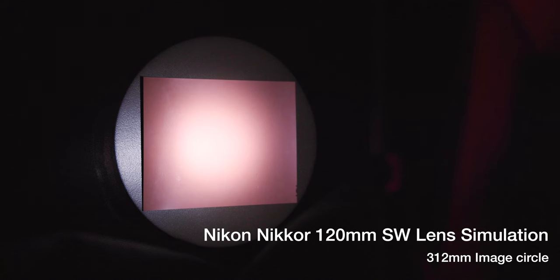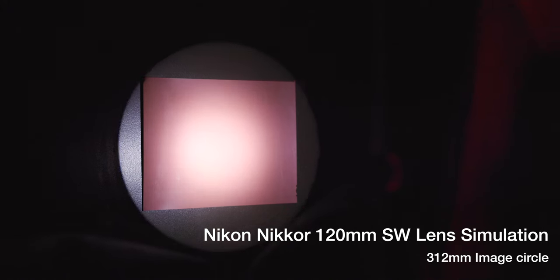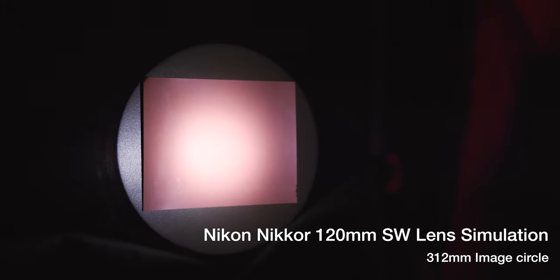Imagine applying rise or fall to your composition and only having an image circle of 312mm at f22, as is in the case of the Nikon Nikkor 120mm SW lens. What would happen? You would end up with an area on the film that was unexposed because the movement extended beyond the image circle. While Nikon reports that the 120mm lens can adequately cover 8x10, you wouldn't be able to apply any movements to your composition.